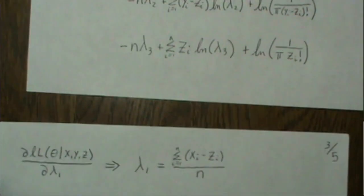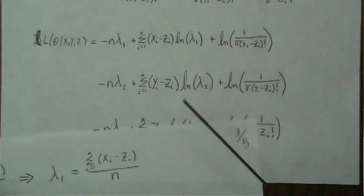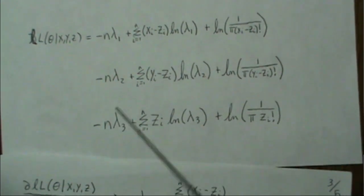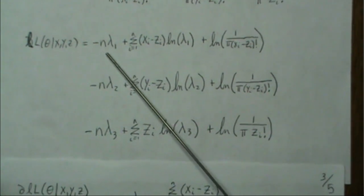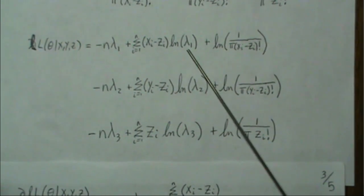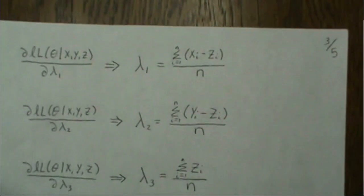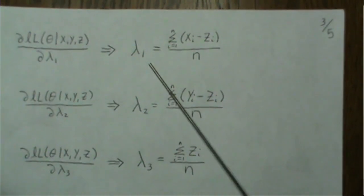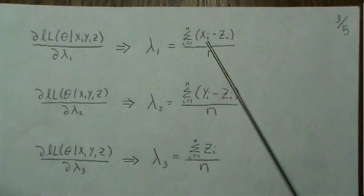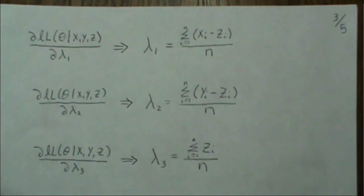Once we've obtained the log-likelihood, we can find maximum likelihood estimates. Because it's pretty straightforward I'm not going to go through all the algebra, but if we take the partial with respect to lambda 1, two rows cancel out because there's no lambda 1. We get minus n plus the sum of those variables over lambda 1, set it to zero, and solve. This makes sense because X1 plus X3 minus X3 gives a clean estimate for lambda 1, and similarly for the others.